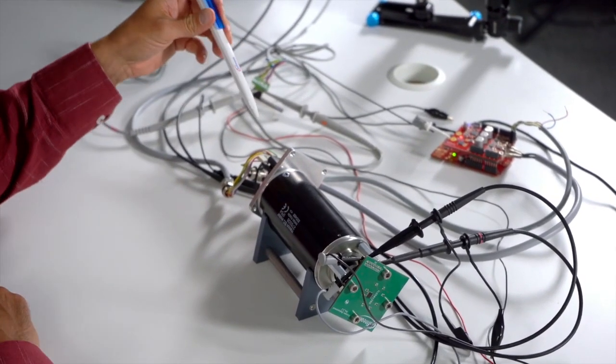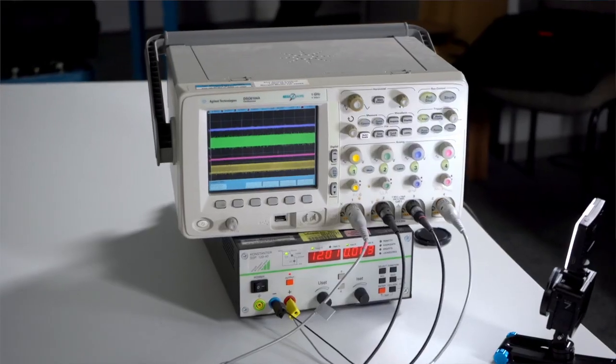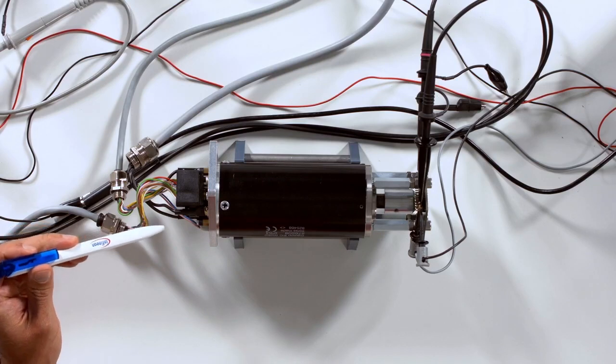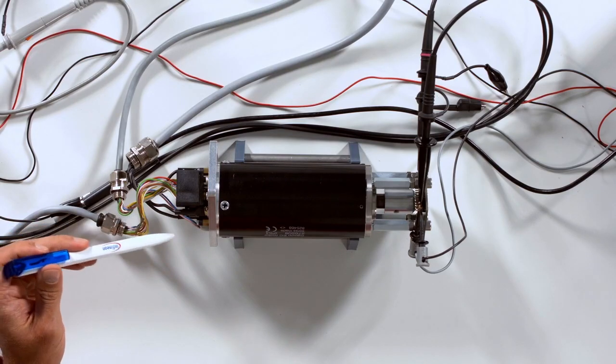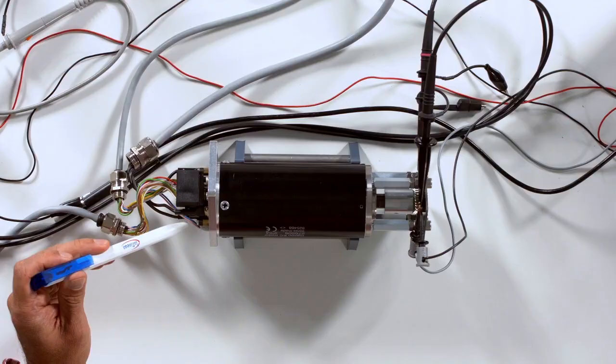First I want to give you an introduction of the setup. So in the center we have the motor, on this side we have an optical encoder. Everything is powered by two power supplies and we have an oscilloscope in order to show you the signals. So this optical encoder is a standard solution and as you can see here it's quite bulky and it even needs to be dust protected in order not to have dust in this optical encoder.